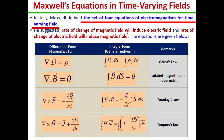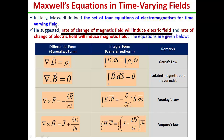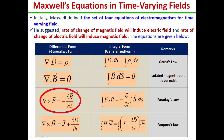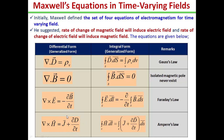Initially, Maxwell defined the set of four equations of electromagnetism for time-varying fields, where he suggested that the rate of change of magnetic field will induce electric field, and rate of change of electric field will induce magnetic field. So this was the prediction of Maxwell — the rate of change of field will induce another field.